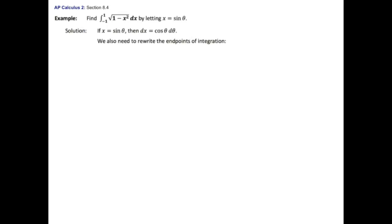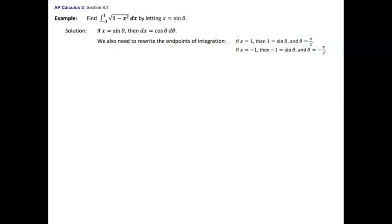We're also going to reassign the endpoints of integration. We'll use the relationship that x equals sine of the angle. So if x is one, then one equals sine of theta, and using angles in the first and fourth quadrant, theta would be pi over two. If x is negative one, then theta is negative pi over two. I want an angle smaller than pi over two, so I'll go with negative pi over two — using fourth and first quadrants.